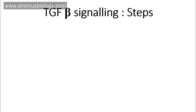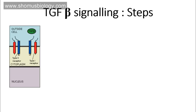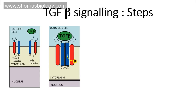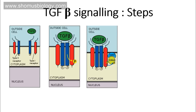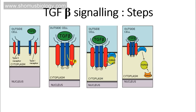Now for the step-by-step process from a different point of view: type 1 and type 2 TGF beta receptors are present on the cell membrane. TGF beta binds and dimerization completes. Type 2 receptor phosphorylates type 1 receptor, and type 1 then activates SMAD by phosphorylating it. The activated SMAD further activates SMAD 4, which acts as a nuclear localizer, because SMAD 2/3 cannot enter the nucleus on their own — they need the help of SMAD 4.